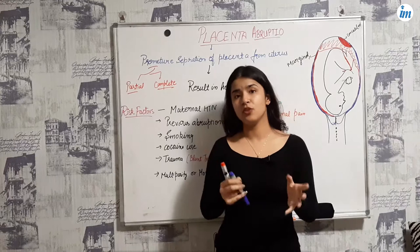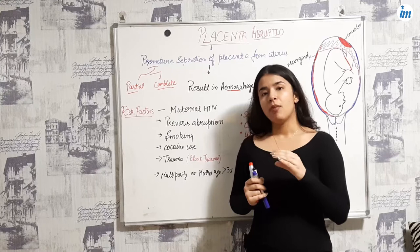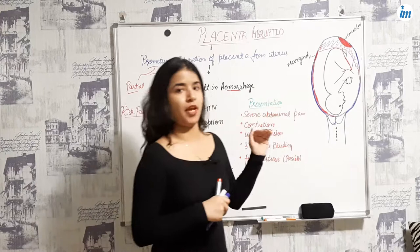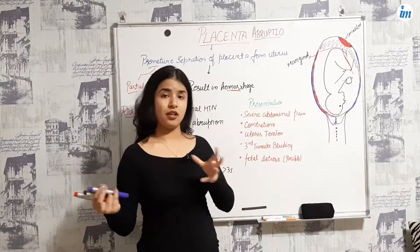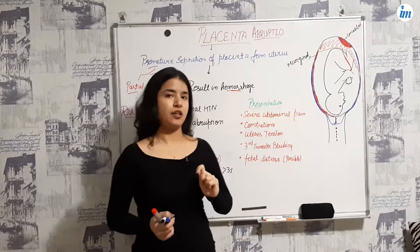Now why does hemorrhage occur? As mentioned, there is a separation of the decidua basalis part of the placenta from the uterus. Generally the maternal part has blood supply, and when there is a separation of the decidua basalis, there is degeneration of the uterine artery which results in hemorrhage. So the hemorrhage is because of the tearing of the arteries.